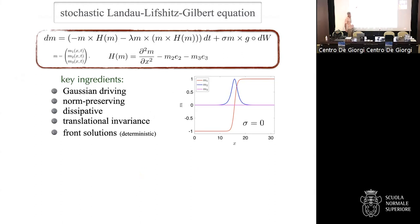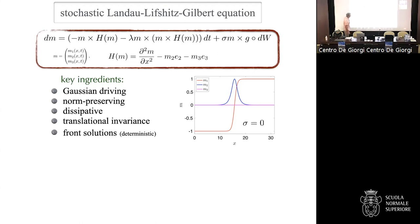The equation looks horrible — it's very complicated. It models the magnetization along a nanowire, but that's completely irrelevant; this is just an example of an SPDE. It has three components m1, m2, m3. We have Gaussian driving here, so it's not explicitly driven by Lévy noise. It's norm-preserving — there's an m-cross in front of every term, so if you start with norm one you stay on the sphere. It's dissipative — lambda is a positive nonzero constant.